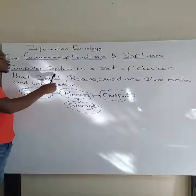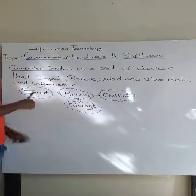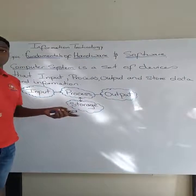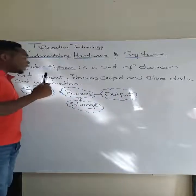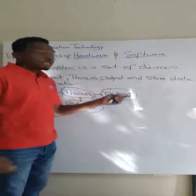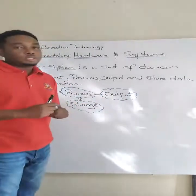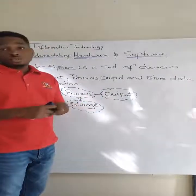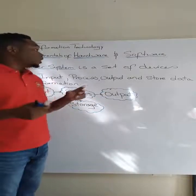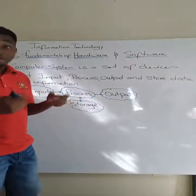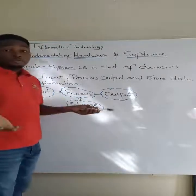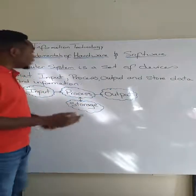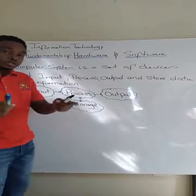A computer system is a set of devices that input, process, output, and store data. Any device that accepts, processes, outputs, and stores data is considered to be a computer system. For example, your smart TV at home that accepts input, stores data, and processes information can be considered a computer system. Your smartphone is considered to be a computer system too.